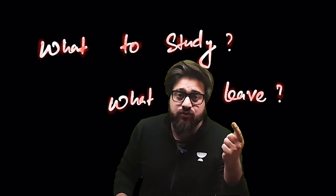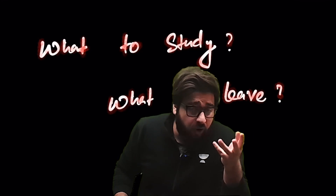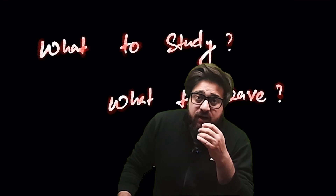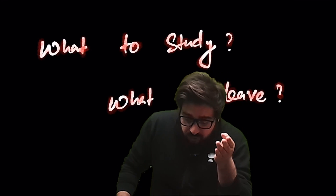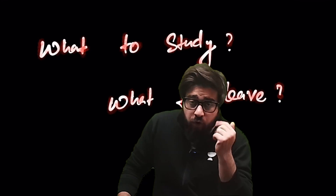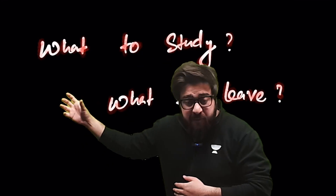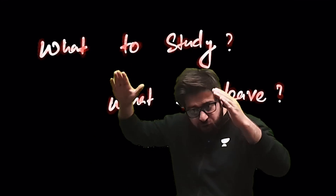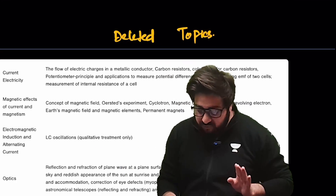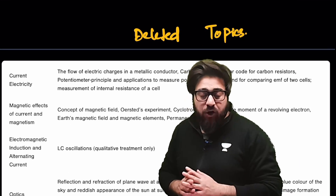Like you have the screw gauge, you have the vernier calipers, you have non-uniform motion, you have rolling — these topics are over there in the experimental skills. I'll be showing you that also. First, let's talk about the deleted topics.